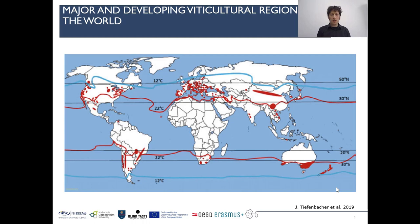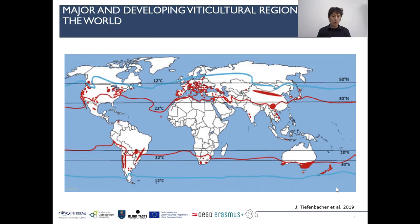Where do we find viticulture and those varieties we're talking about? On the northern hemisphere, we find commercial viticulture between the 30th and 50th degree north. Due to climate change in recent years, we are tending to shift northwards, so that even in areas like Belgium, the Netherlands, Poland, northern Germany and Scandinavia we find more and more viticulture. On the southern hemisphere, viticulture is found around 30 degrees south, with New Zealand and Tasmania going even further south into cooler areas.